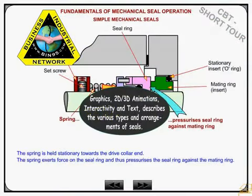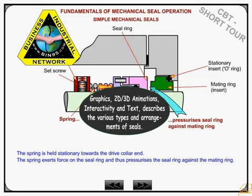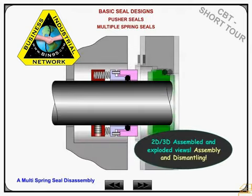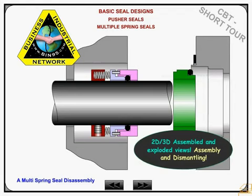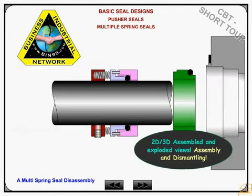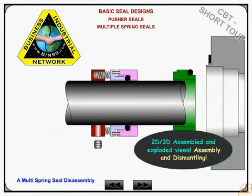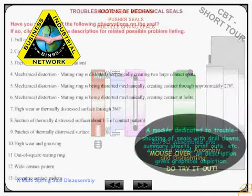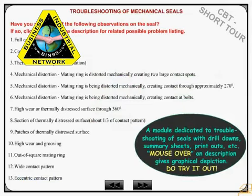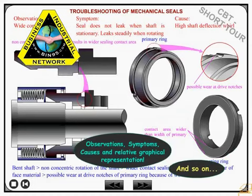Graphics, 2D and 3D animations, interactivity, and text are designed to describe the various types and arrangements of seals. There are various 2D and 3D graphics showing assembled and dismantled views of different seals. The module dedicated to troubleshooting of seals is full of drill-downs, summary sheets, and printouts to help solve the problem.